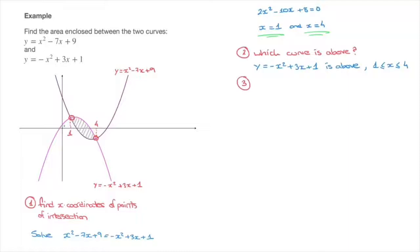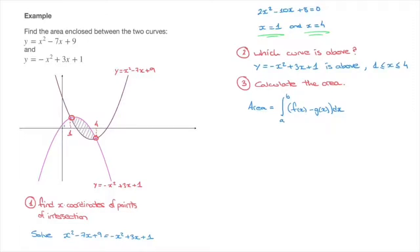We now move on to step 3, where we calculate the enclosed area using the formula: area equals the definite integral from a to b of f(x) minus g(x). The lower and upper limits are the x coordinates of the points of intersection found in step 1, so a equals 1 and b equals 4. In the integrand, f(x) is the curve that is above — y equals negative x squared plus 3x plus 1 — and g(x) is the other curve, x squared minus 7x plus 9.